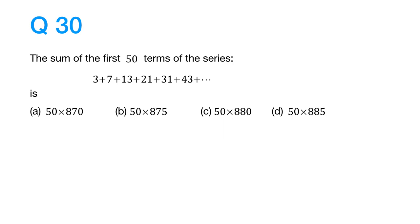How do we do this question? Well, first of all, let us write down the terms of this series. Let us closely look at the terms. We have 3, 7, 13, 21, 31, 43 and so on.